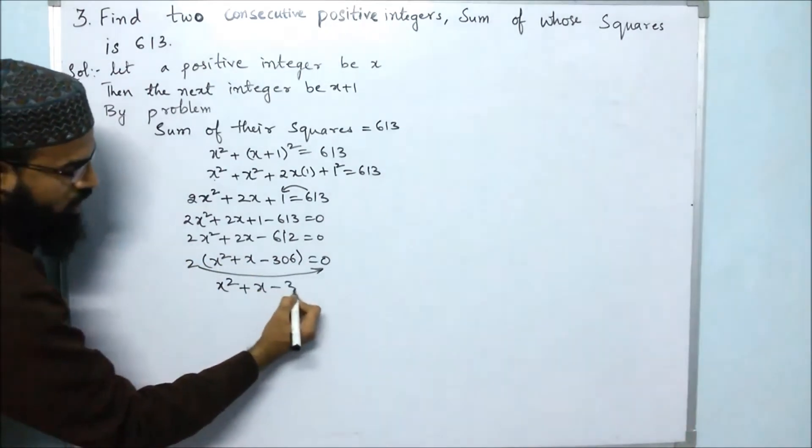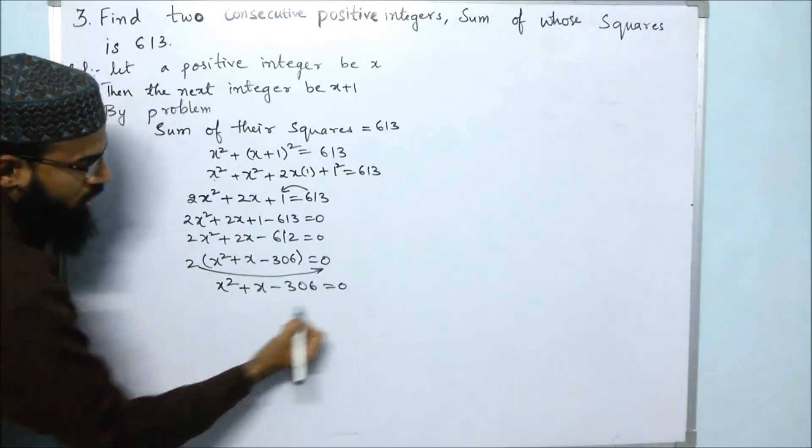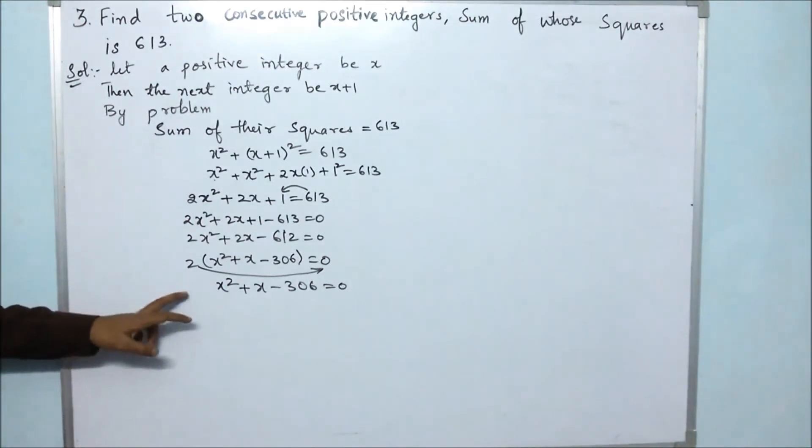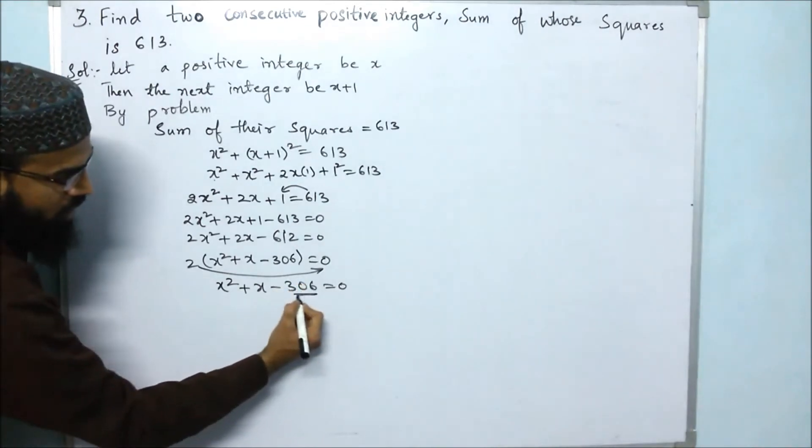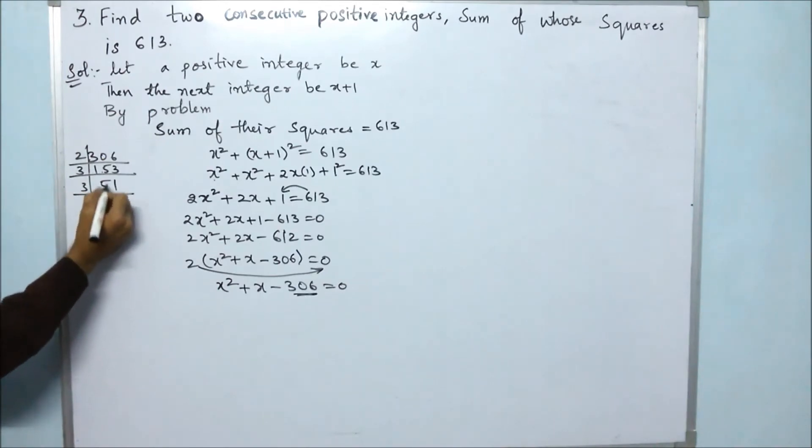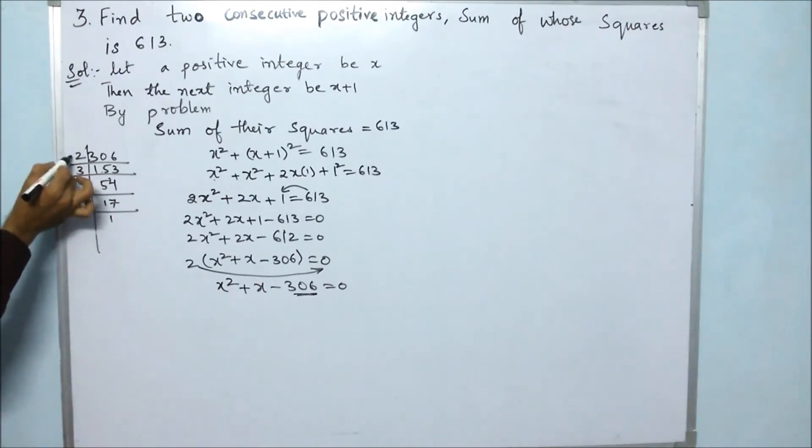So x² + x - 306 = 0. Now it is a quadratic equation. We will find out the factors. So for finding the factors, let us take out the factors of 306. 2 × 153 = 306, 2 × 3 = 6. Next 3 × 51 = 153, 3 × 1 = 3, 3 × 1 = 3, 2 is left. 3 × 7 = 21, 17 × 1 = 17.